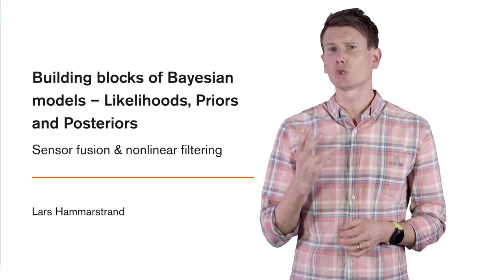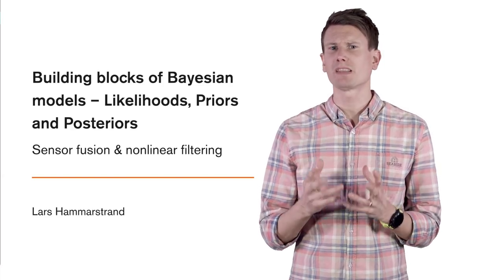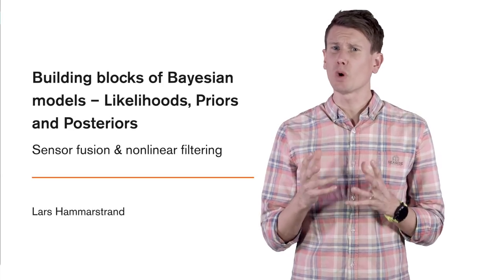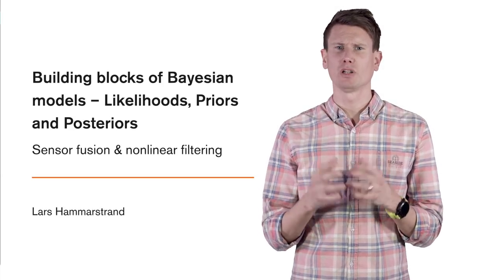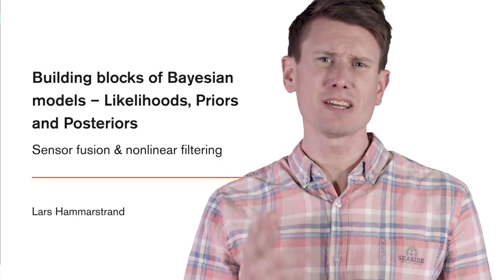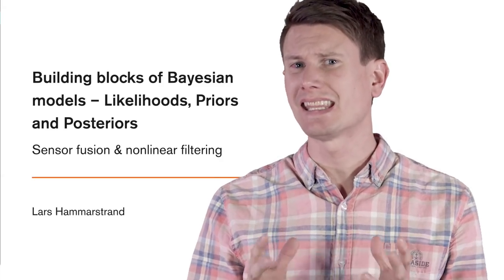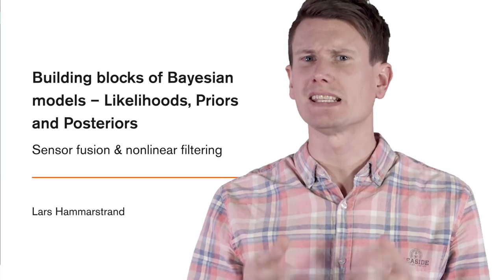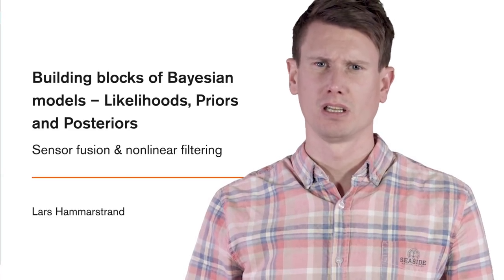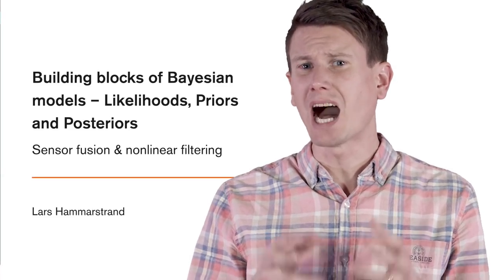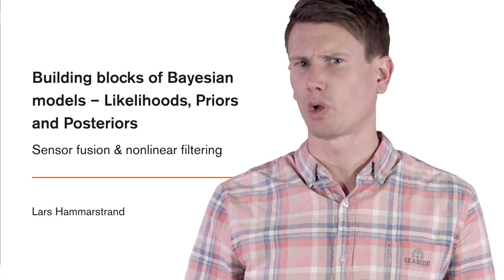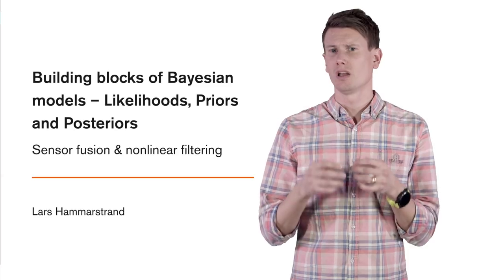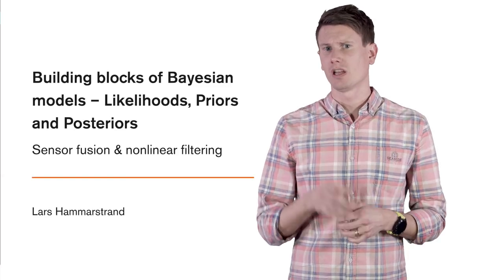In this video, we're going to talk about the basic building blocks of Bayesian models. It turns out that most Bayesian problems have a similar structure. It is therefore helpful to identify and name these common components, such that we can more easily express ourselves. This will also help us to see how we need to address a specific problem at hand. We call these building blocks likelihood, priors, and posteriors.